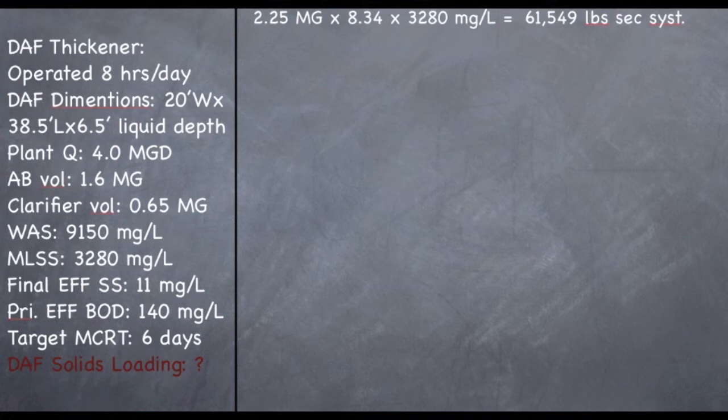Step two is we need to find out how many pounds are leaving the system every day. So, we're going to take the plant flow, 4 MGD, times 8.34, times the final effluent suspended solids concentration, which is 11, and we get 367 pounds of effluent TSS leaving the system every single day.